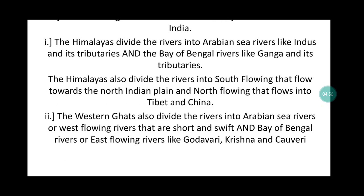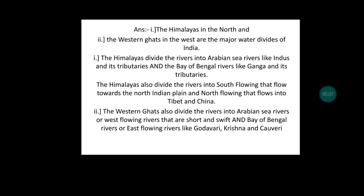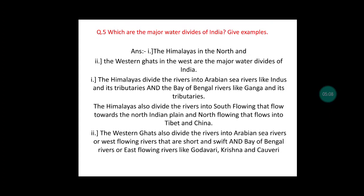The Western Ghats divide the rivers into Arabian Sea rivers, or west-flowing rivers, that are short and swift, and Bay of Bengal rivers, or east-flowing rivers, like the Godavari, Krishna, and Kaveri.